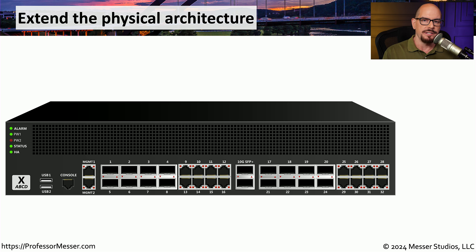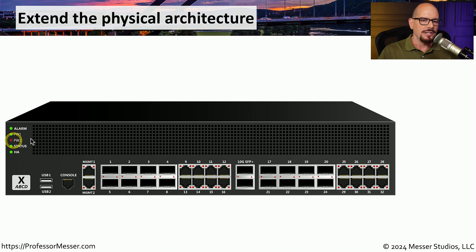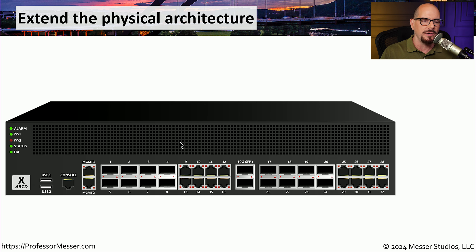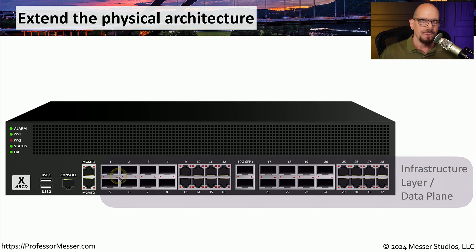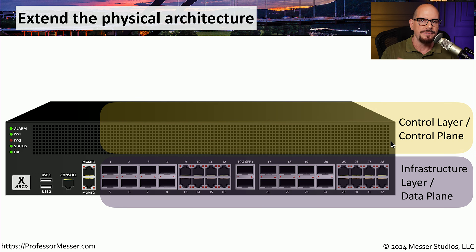So let's take a physical networking device and turn it into a software-defined networking device. Let's start with a physical firewall. The firewall generally has functionality to connect different networks together, with logic inside to determine how information is forwarded from one interface to another, and ways to manage the device on the front console or through a web-based front end. The interfaces on the front of the firewall where we connect all of our networks represent the data plane or the infrastructure layer — this is where all of the data is forwarded from one interface to another.